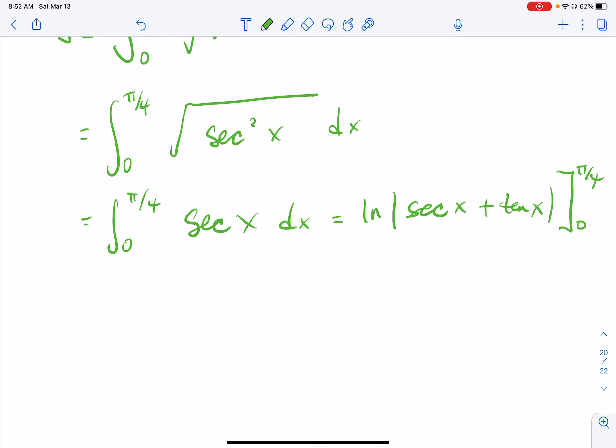All right. And then let's put our FTC into action. Natural log absolute value of the secant of pi over four minus the tangent of pi over four.